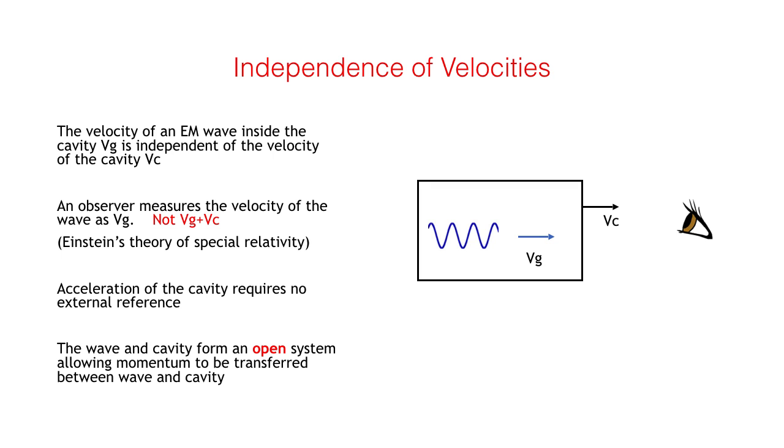Einstein's theory of special relativity tells us that the speed of light C is constant. It follows that if an electromagnetic wave is traveling inside a cavity with velocity Vg, no matter what the velocity of the cavity is, Vc, an external observer will still measure the wave velocity as Vg, not Vg plus Vc. Vg is therefore independent of Vc. Note also that any acceleration of the cavity is independent of an external reference. An observer inside the cavity could measure acceleration without seeing any external reference. The wave and cavity form an open system and momentum can therefore be transferred between wave and cavity.